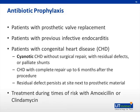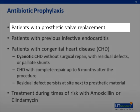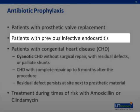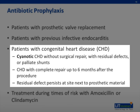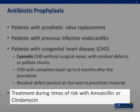The American Heart Association changed their guidelines for prophylaxis in 2007, limiting prophylaxis to a subset of higher-risk patients. These include patients with prosthetic valve replacement, patients with previous infective endocarditis, and patients with congenital heart disease. Not all forms of congenital heart disease deserve prophylaxis. The forms that do include cyanotic congenital heart disease without surgical repair, with residual defects or palliative shunts, congenital heart disease with complete surgical or catheter repair up to six months after the procedure, and residual defects that persist at a site next to prosthetic material.